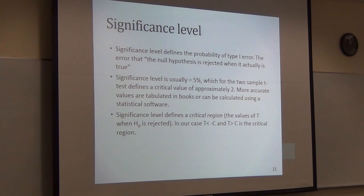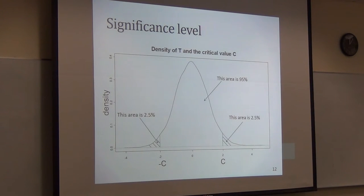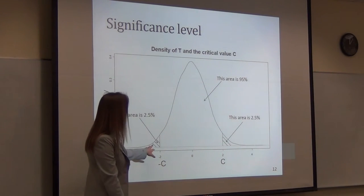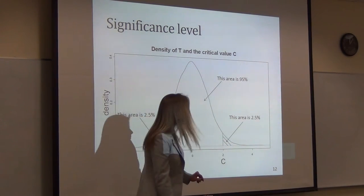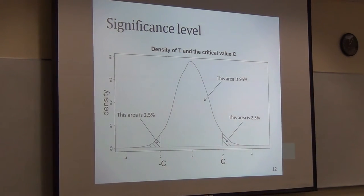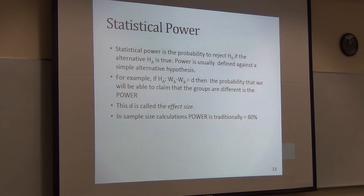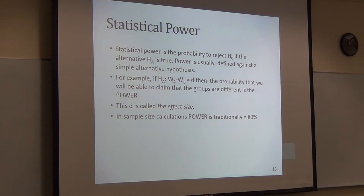The critical region is five percent split on the left and right — two and a half percent on each tail. Power is the probability to reject the null if the alternative is true, defined based on the alternative hypothesis. When looking at the difference D, the probability to detect that difference is called power, and D is called the effect size.